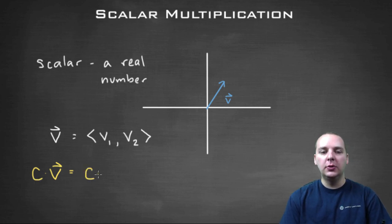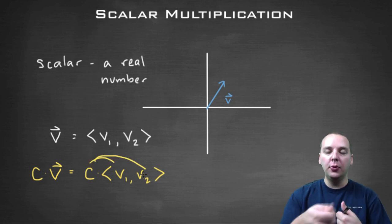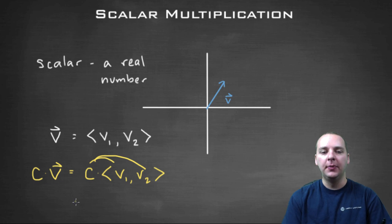What we're going to do is take c times the vector <v1, v2>. And then basically to do the multiplication, you simply distribute the scalar through all the components in the vector. So you'll have <c times v1, c times v2>.